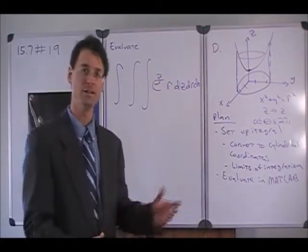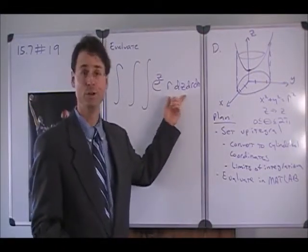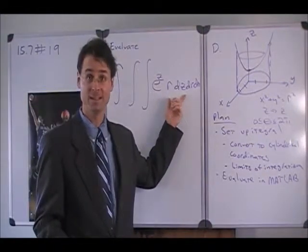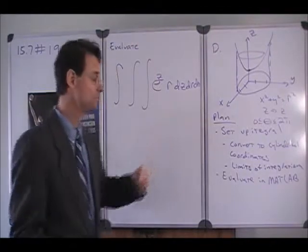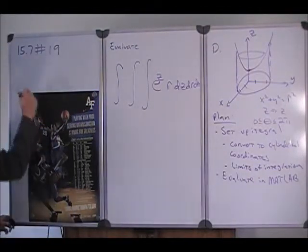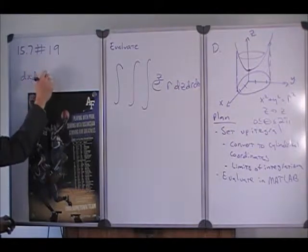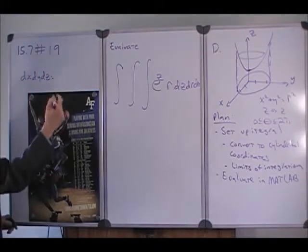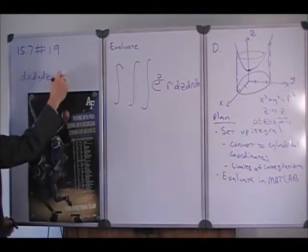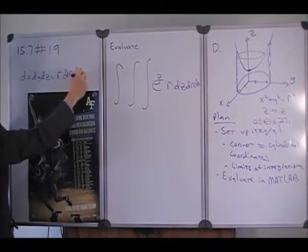And an r always pops out from the Jacobian when you're working an integral in cylindrical coordinates. And if you prefer not to worry too much about things like Jacobian, you just remember that dx, dy, dz, once you go to cylindrical coordinates, becomes r, dr, d theta, dz.